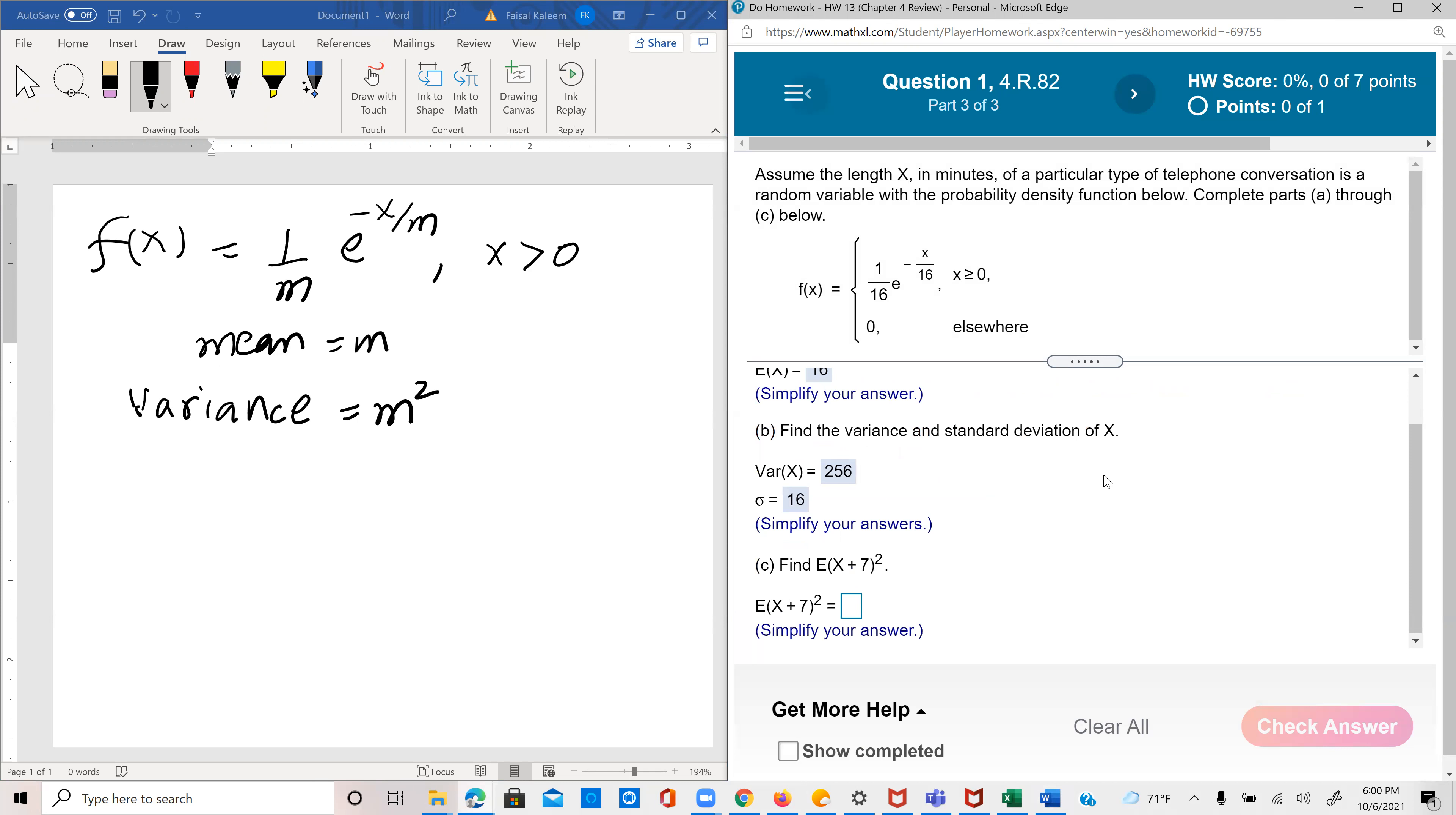Now, this one, normally you would find this kind of expected value by integrating this x plus seven whole square against this function, but that would mean integration by parts and we want to avoid it. So here's a clever way of doing it.